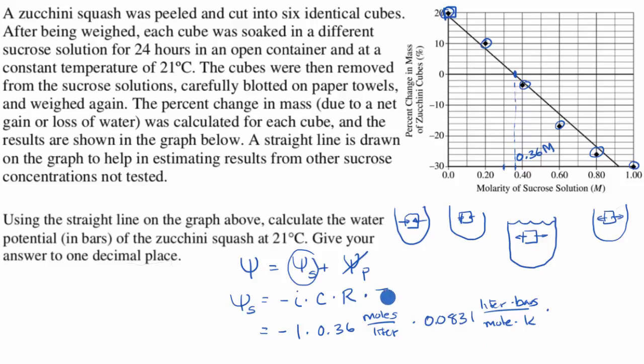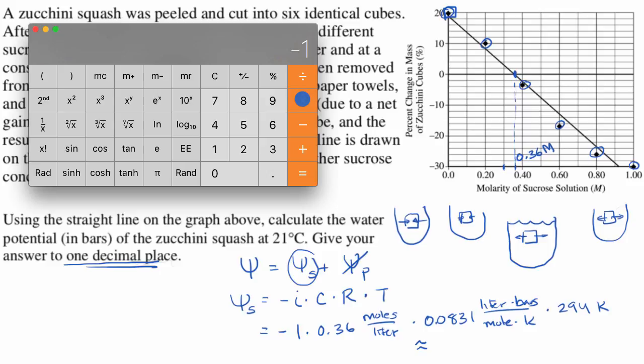And then times the temperature in Kelvin. Well, if we're dealing with 21 degrees Celsius, we just add 273 to that, so times 294 Kelvin. And now we can just get our calculator out, negative one times 0.36 times 0.0831 times 294 is equal to, if I round to one decimal place, it's going to be negative 8.8.